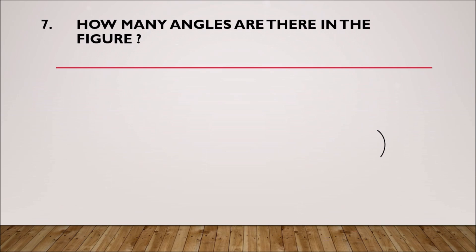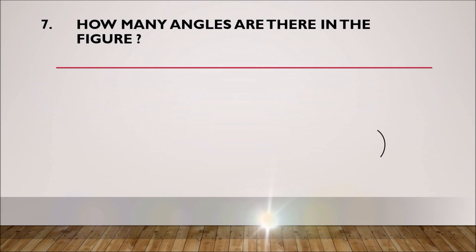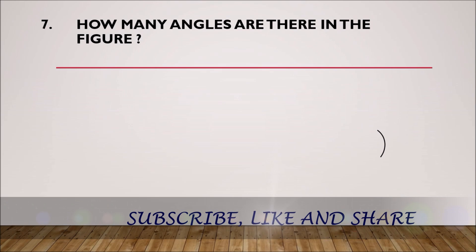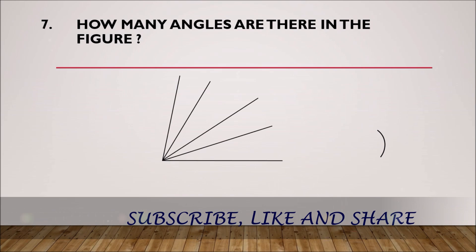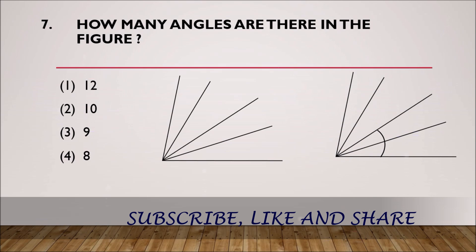Question number 7: How many angles are there in the figure? Here we have a figure with 5 arms. Options: 12 angles, 10 angles, 9 angles, or 8 angles.